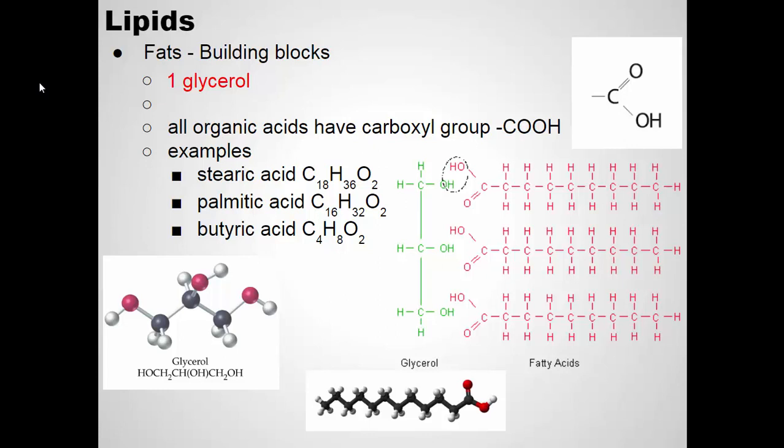Attached to that glycerol are three fatty acids, shown in red. There is a variety of fatty acids that could be attached to the glycerol. Stearic acid is 18 carbons long, palmitic acid is 16, and butyric acid is 4. These fatty acids have a carboxyl group at the end — a carbon double bonded to an oxygen, with the other bond to a hydroxide. That's called a carboxyl group.